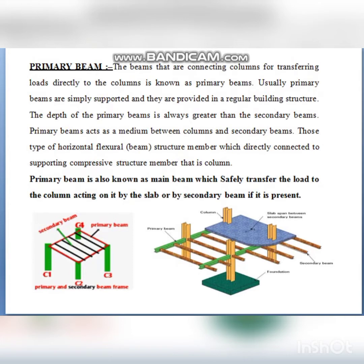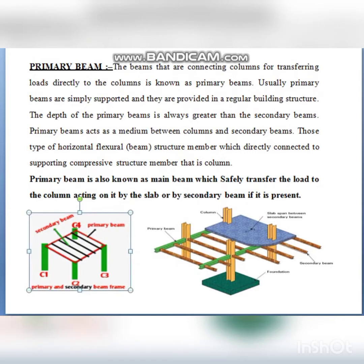This primary beam is also known as the main beam, which safely transfers the whole structural loads to the column — loads acting on it from the slab or from a secondary beam if present. In this first image, the beam connecting column C4 and column C3 is the primary beam.